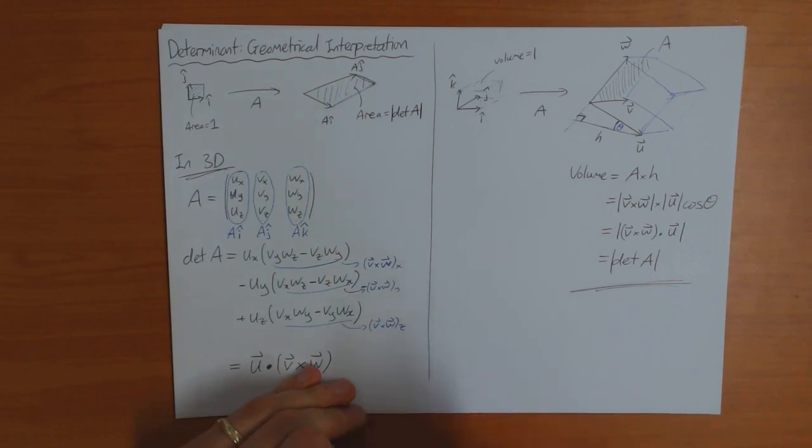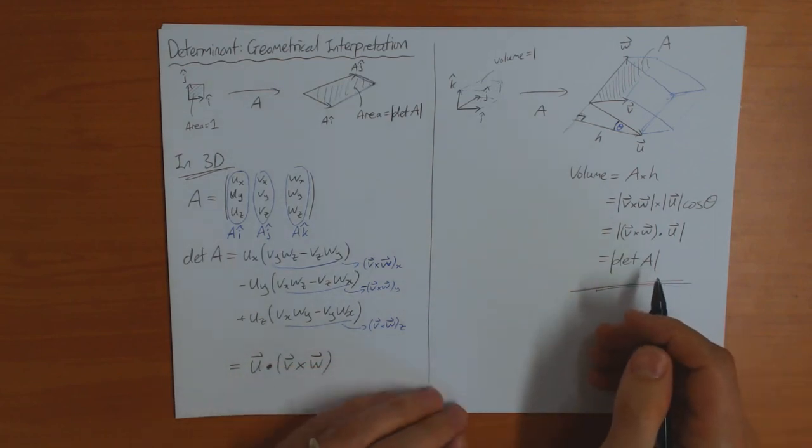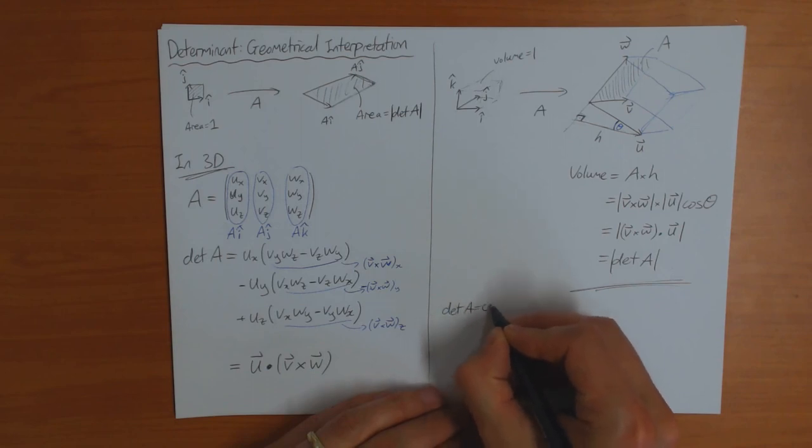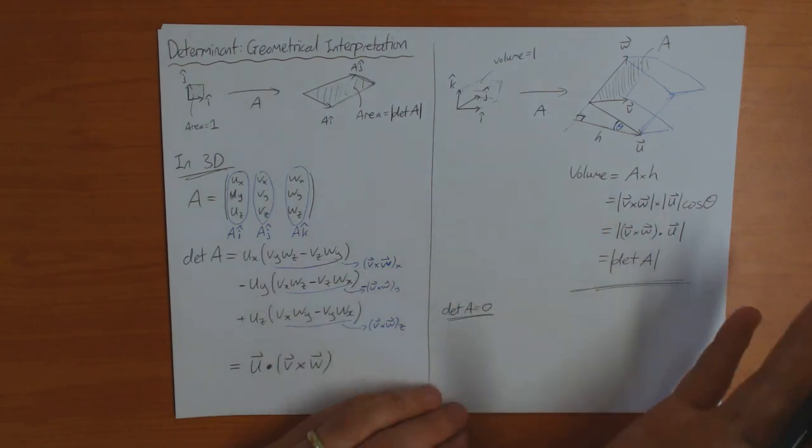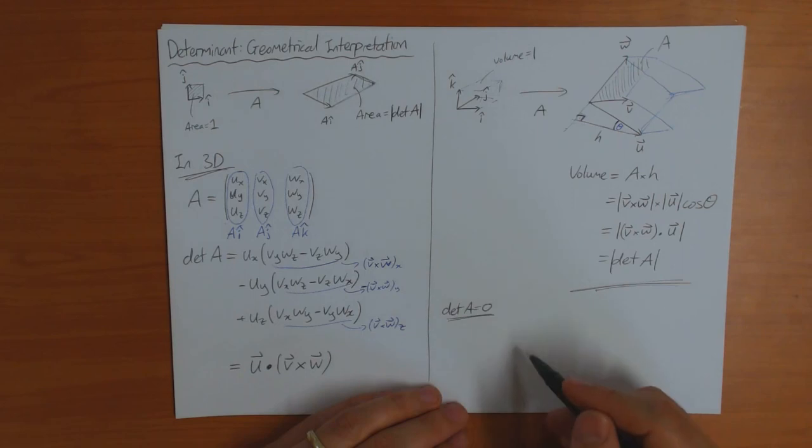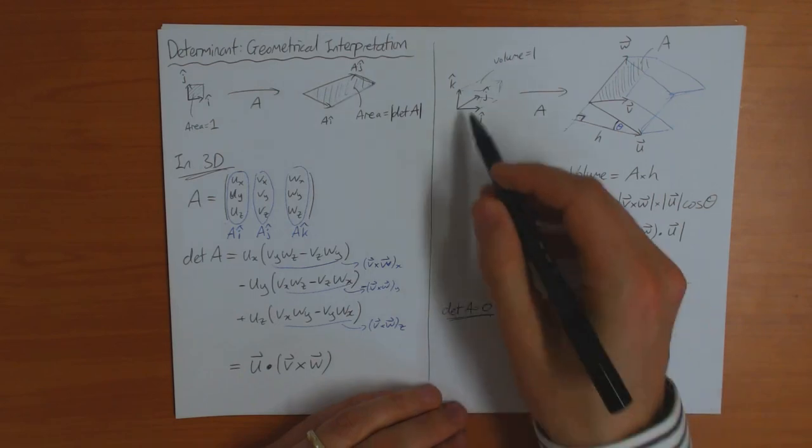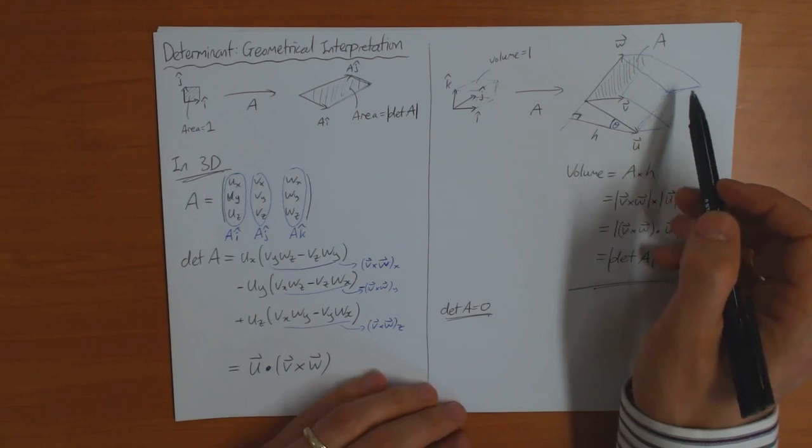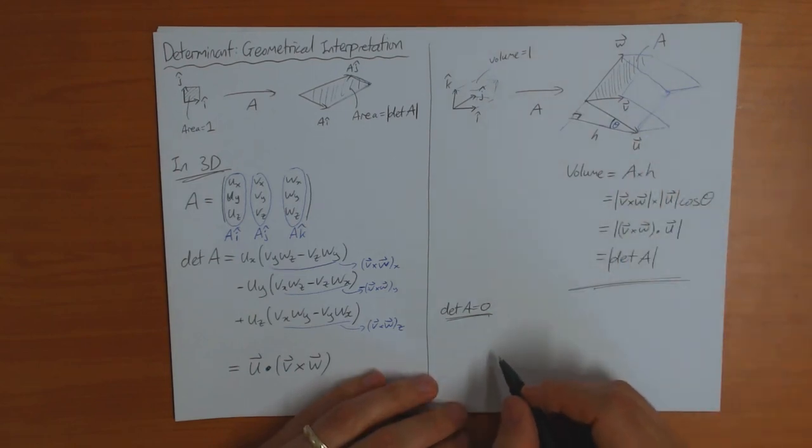Now, this also gives you an easy geometrical way to understand why if the determinant of A is zero, then that means that there's no inverse. Because determinant of A is zero in this geometrical picture must mean that the volume of this shape is zero. Well, how can the volume of this shape be zero?